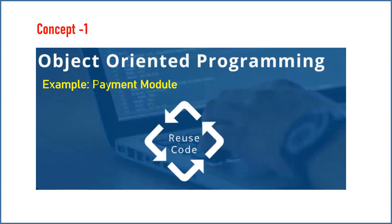Let us talk about what exactly object-oriented programming is. Even if you have some knowledge of any programming language learned during college or a diploma or engineering course — what exactly is object-oriented programming? It is the concept of reusing code. When we write code, we should write it in a way that if that code needs to be executed in other applications or multiple times, we can write it once and execute it multiple times using functions and procedures.